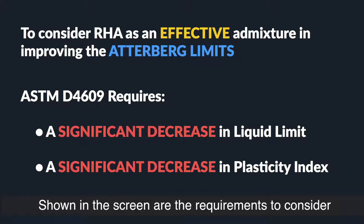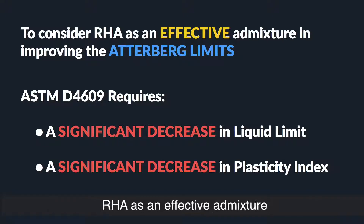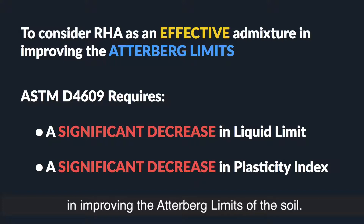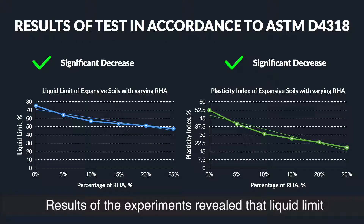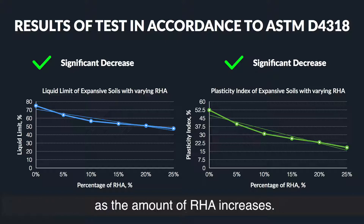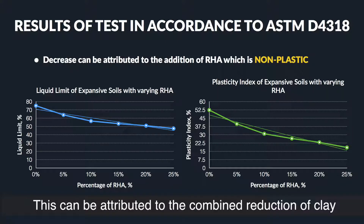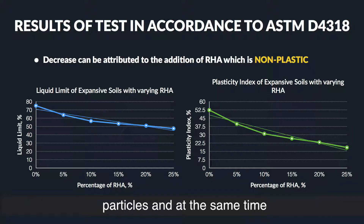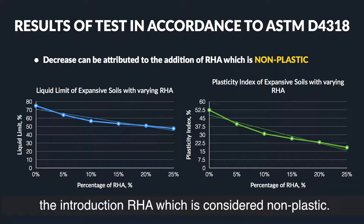Shown on screen are the requirements to consider RHA as an effective admixture in improving the Atterberg limits of the soil. Results of the experiment revealed that the liquid limit and the plasticity index of the soil experience a significant decrease as the amount of RHA increases. This can be attributed to the reduction of clay particles and the simultaneous introduction of RHA, which is considered non-plastic.